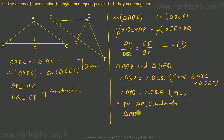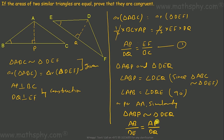By angle-angle similarity, triangle ABP is similar to triangle DEQ. Therefore, AB over DE equals AP over DQ. Since triangle ABC is similar to triangle DEF, we also have BC over EF equal to AB over DE, so BC over EF equals AP over DQ. This is equation number two.